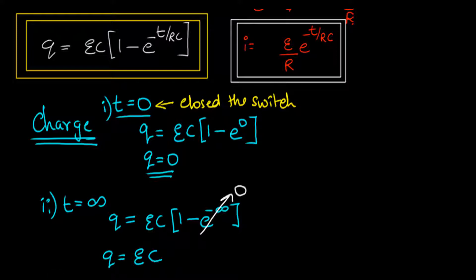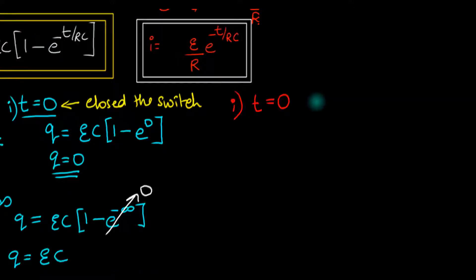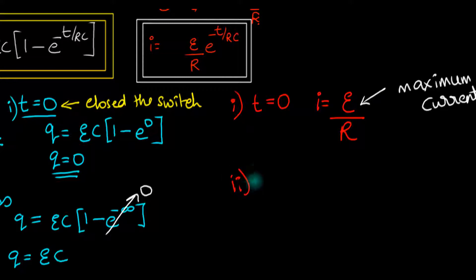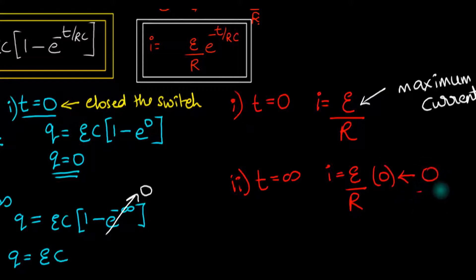There's one more time I'm interested in, but first let's quickly do the current. At t equal to 0, the current I is going to be E divided by R times 1. That's what we expected — when you close the switch there is going to be a huge surge in current. This is the maximum current. At t equal to infinity, we get E/R times e to the power minus infinity, which is just 0. Everything is making sense, exactly like what we expected in the first video.